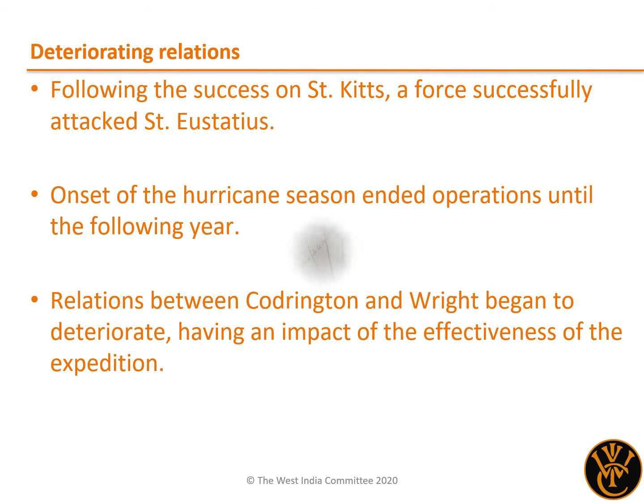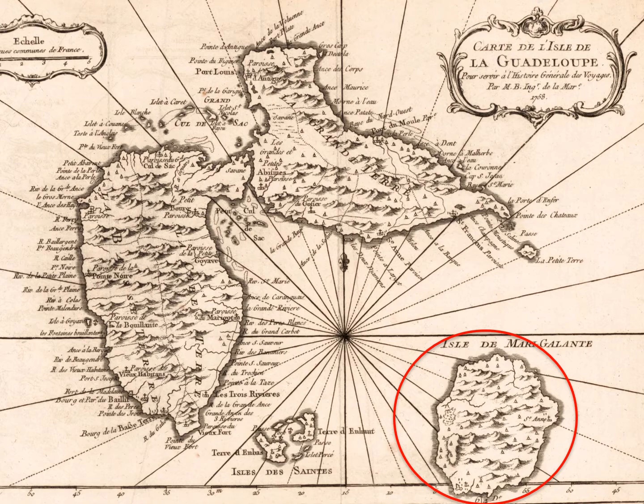Troops were landed on the island of Marie-Gallant on 28 March 1691, where the French had abandoned their fortifications and chosen to hide in the island's wooded interior, where the English had to flush them out successfully. However, they chose not to leave a garrison and proceeded to Marie-Gallant's more strategically important neighbour, Guadeloupe.